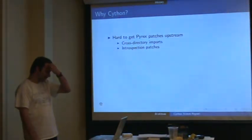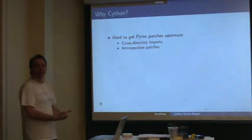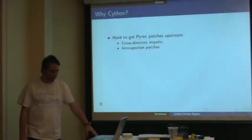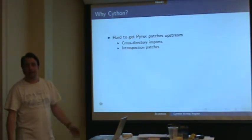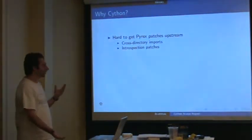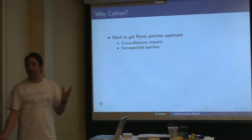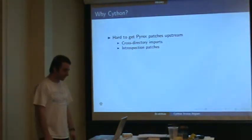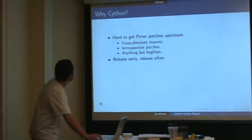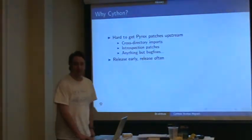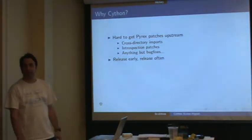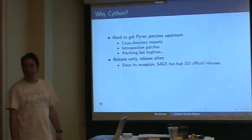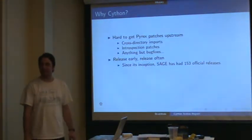These are the patches we started off with because we needed them in Sage. For the first one — cross-directory imports — Greg didn't think it was a bug. He never had projects that had 100,000 lines of Pyrex code in them, so he didn't need it. We also have the model of release early, release often — we've had 153 Sage releases in the last two years or so.